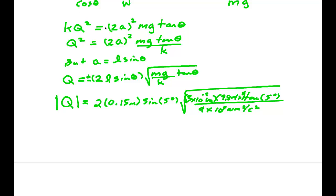And of course we need to check the units. A kilogram times a meter per second squared is a newton. So this is going to produce a coulomb per meter. And then I'm going to multiply by meter and I'll have coulombs. So everything is working out as it should. Now I have to punch this number into a calculator. 2 times 0.15 times sine of 5 times square root 3×10⁻² times 9.8 times tan of 5 divided by 9×10⁹. Punch all that. And I get 44.2 nanocoulombs.